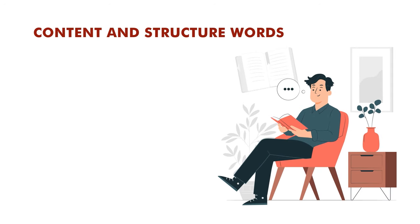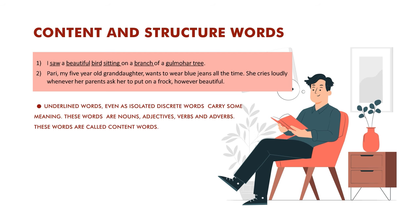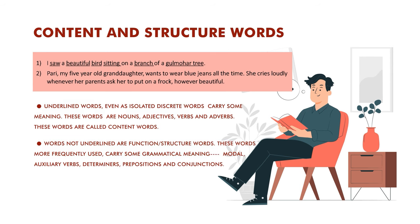Then you have content and structure words. Look at this sentence: 'saw beautiful bird sitting branch gulmohar tree.' The underlined words — saw, beautiful, bird, sitting, branch, gulmohar, tree — even as isolated, discrete words carry some meaning. These are nouns, adjectives, verbs, and adverbs, so these are called content words. Words which are not underlined — like 'I,' 'a,' 'on,' 'of' — these are function or structure words. They carry grammatical meaning; they don't carry content meaning.